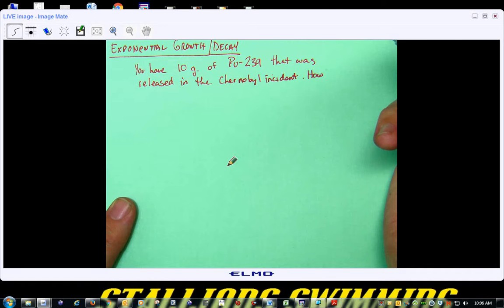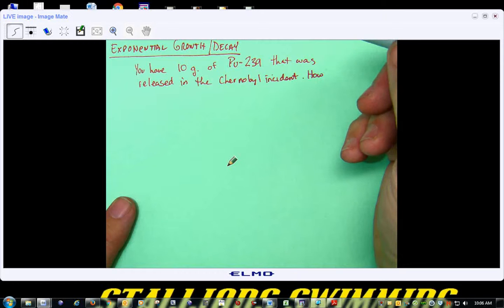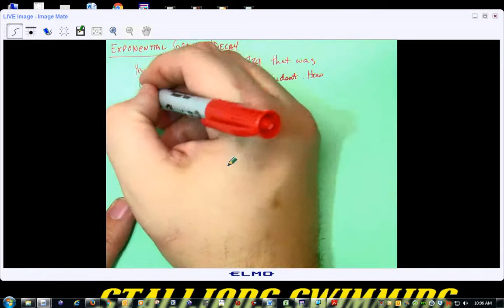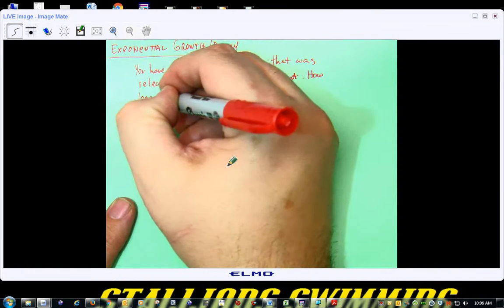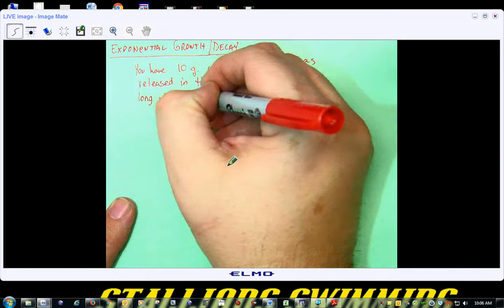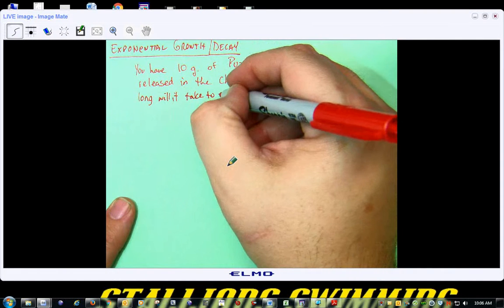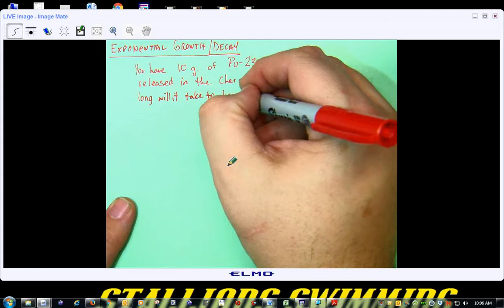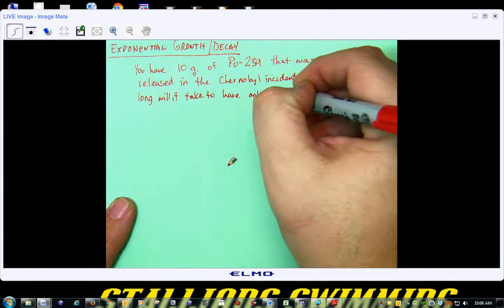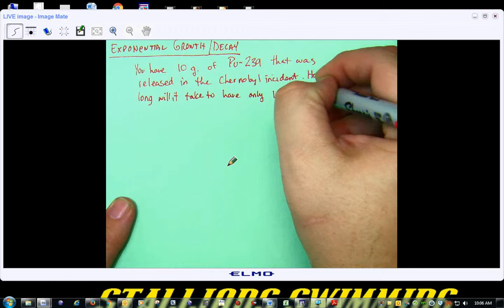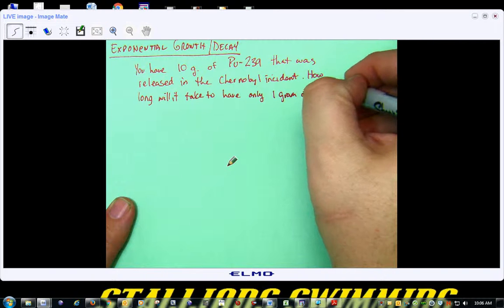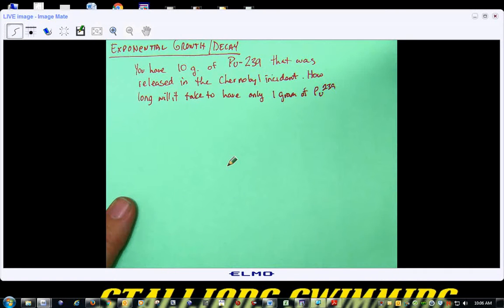C-H-E-R-N-O-B-Y-L. Chernobyl. This was a nuclear accident that took place right around either late 80s, early 90s. How long will it take to have only one gram of plutonium-239?